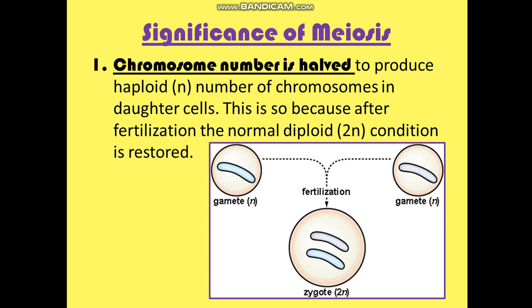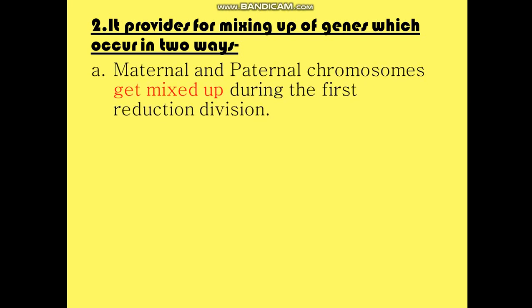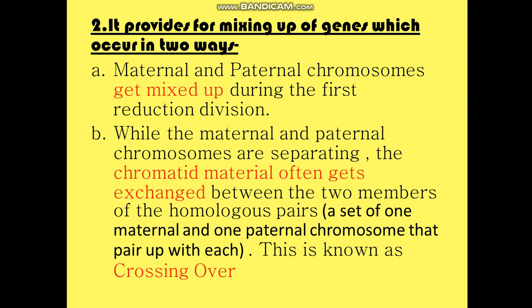The second significance is related to pachytene. Meiosis provides for mixing up of genes, which occurs in two ways. First, maternal and paternal chromosomes get mixed up during the first reduction division. We have homologous pairs of chromosomes — out of the two members, one is from the mother's side and the other from the father's side. So we have two similar chromosomes inside our cells, and these come together and mix up during the first reduction division.